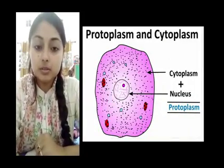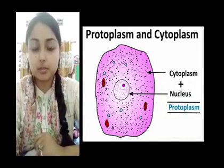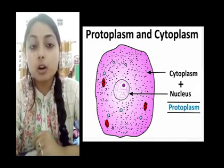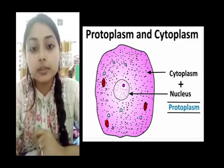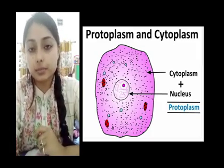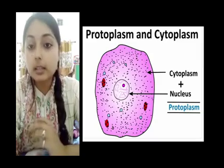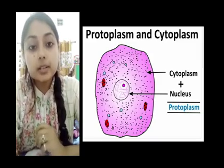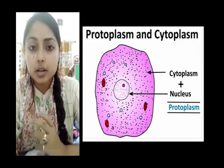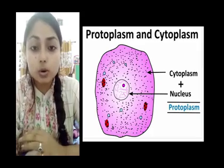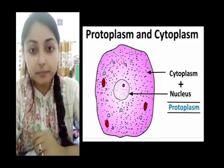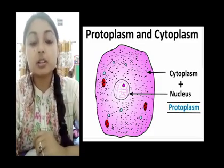Now let us learn a little more about protoplasm. The term protoplasm has been used by biologists for a long period of time, meaning the living substance in an organism. This living substance or protoplasm is contained in the cells. The living substance is described as a translucent fluid — translucent substances are those that are semi-transparent, for example the glass windows in our school. So the protoplasm or the living substance is translucent.